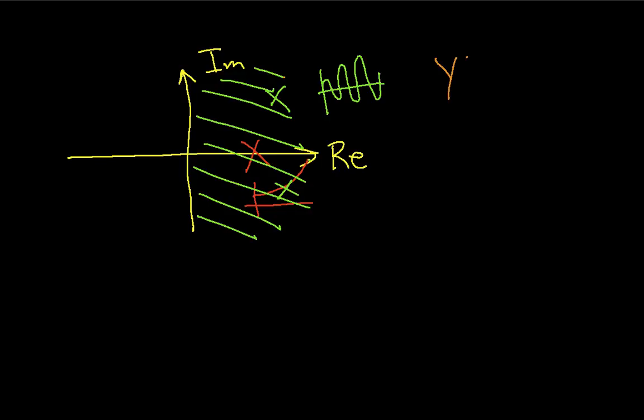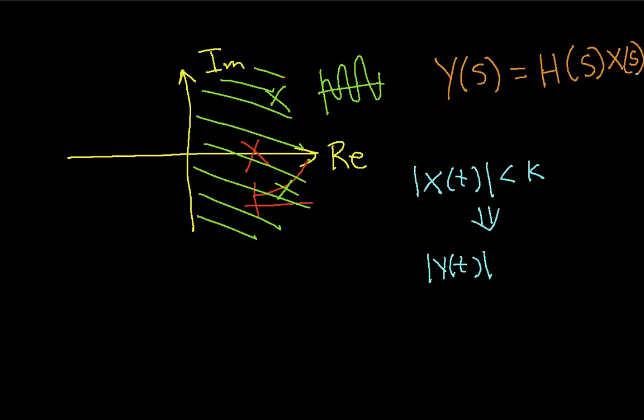You'll recall that the output of a system, y, is the transfer function times the Laplace transform of the input. And stability means that if x of t is bounded, so the magnitude of x of t is less than some constant, this implies, if a system is stable, that the magnitude of y of t is less than some other constant. If that's true, the system is stable.